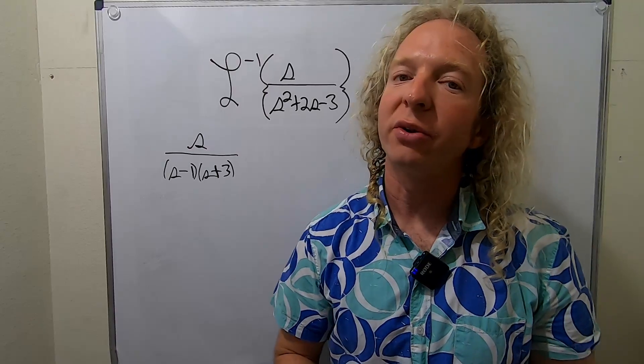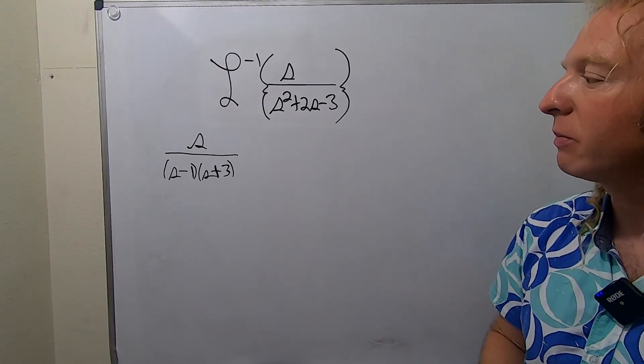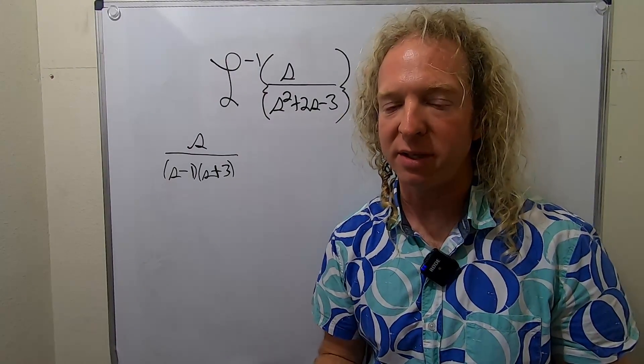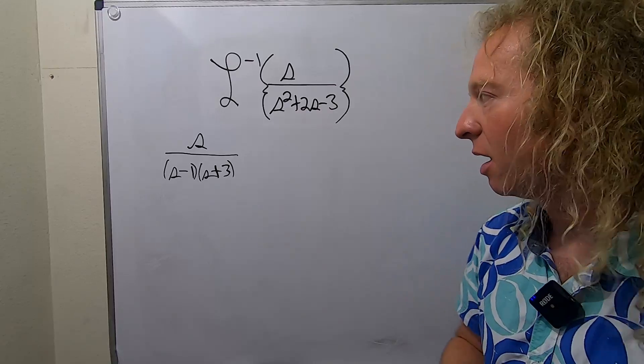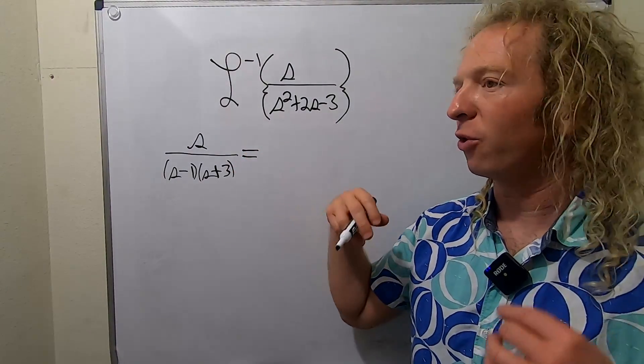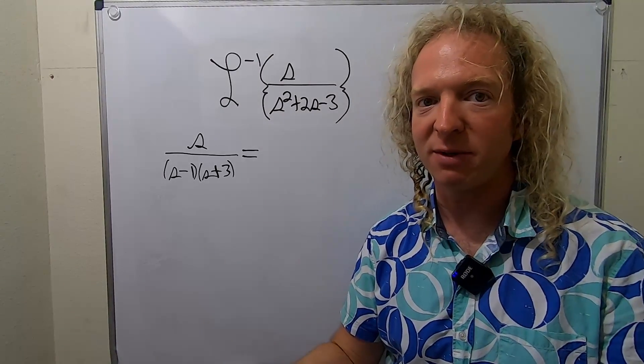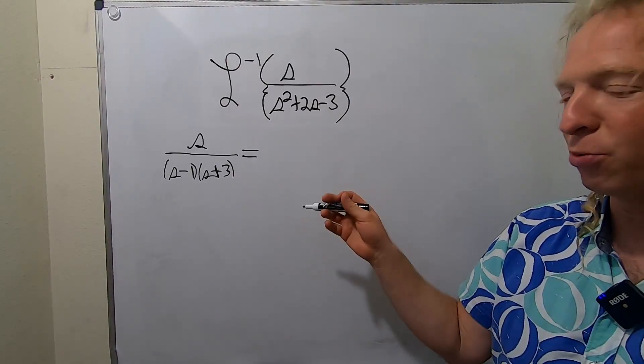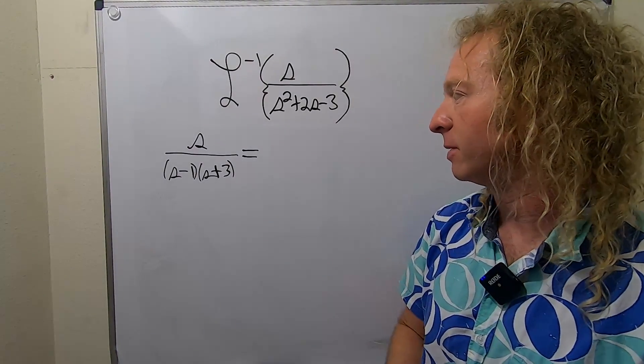So now we're going to use what's called partial fractions, and we're going to use something called the cover-up method. It's named after a famous physicist, his name was Oliver Heaviside, I believe. And this is the same guy for which the unit step function is named. It's called the Heaviside step function. So a super famous dude from the past.